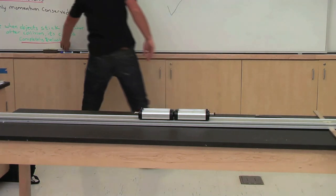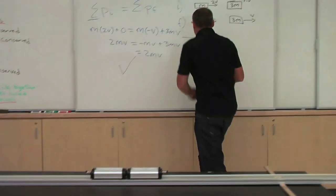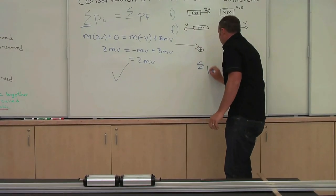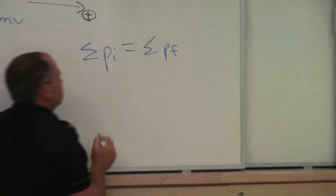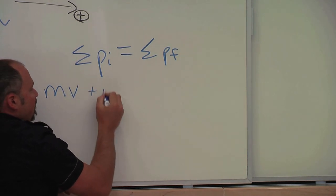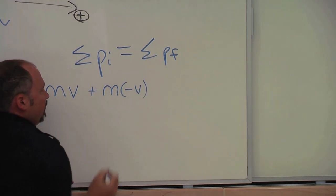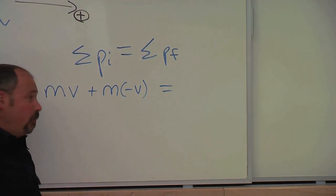And that's because when we conserve momentum here, I'll do it down here at the bottom of the board. The initial momentum equals the addition of the final momentum. Well, initially, we had one guy going this way and the other guy going the other way. In the final situation, nobody's moving. So the momentum is zero.